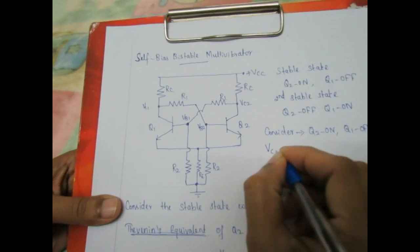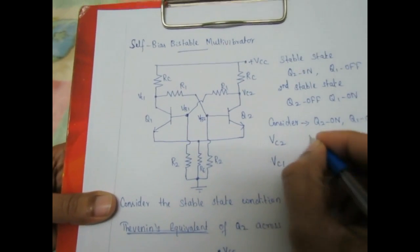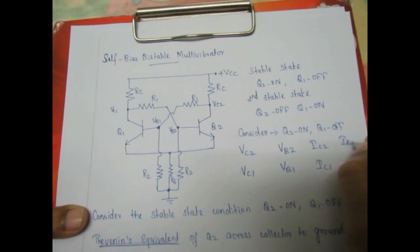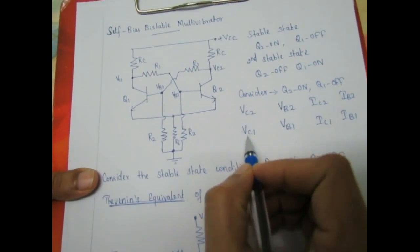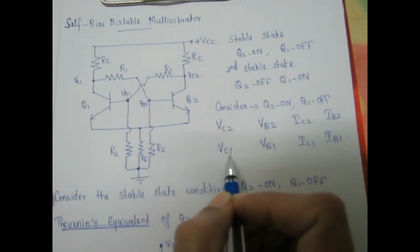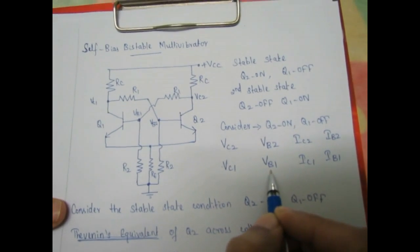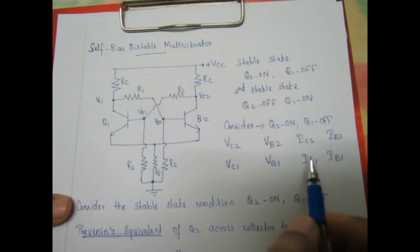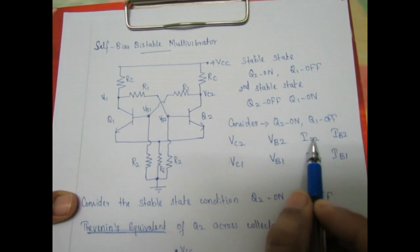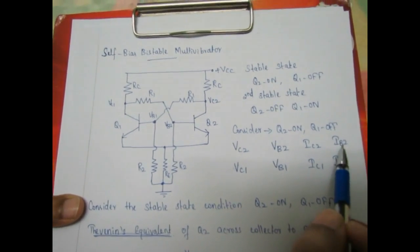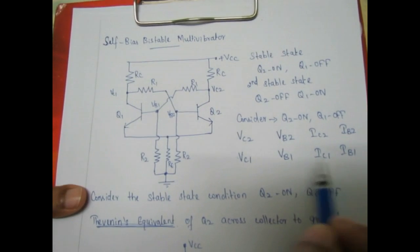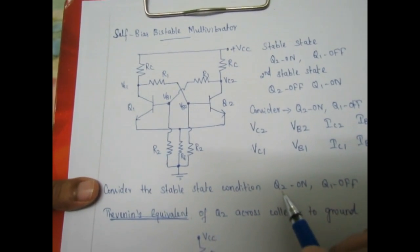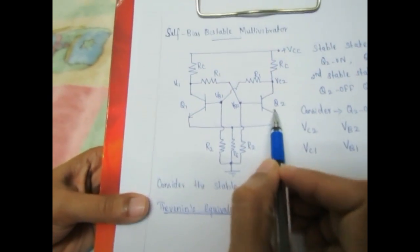If Q2 is ON and Q1 is OFF, we have to find Vc2, Vc1, Vb2, Vb1, Ic2, Ic1, Ib2, and Ib1. Vc2 and Vc1 are the collector voltages across the Q2 and Q1 transistors; Vb2 and Vb1 are the base voltages; Ic2, Ic1 are collector currents; Ib2, Ib1 are base currents. These eight parameters are called the stable state voltages and currents. We consider Q2 ON and Q1 OFF for this analysis.